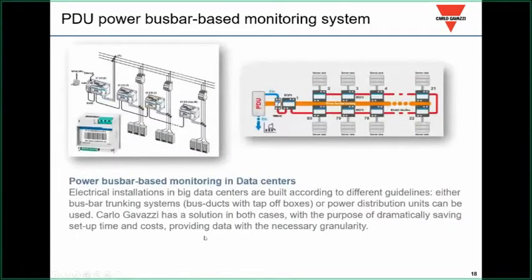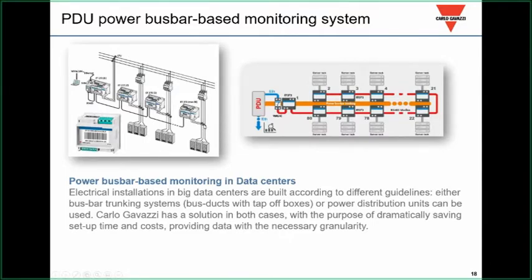The other approach uses power bus bars at the power distribution units. We use a transducer—the ET272—like an energy meter without a display. From the mains, it feeds individual server racks that can be daisy-chained. The ET272 uses small, compact, ganged current transformers to pull data back to our UWP gateway controller. So you're either monitoring multiple branch circuits or a bus bar, and we have solutions for both applications.